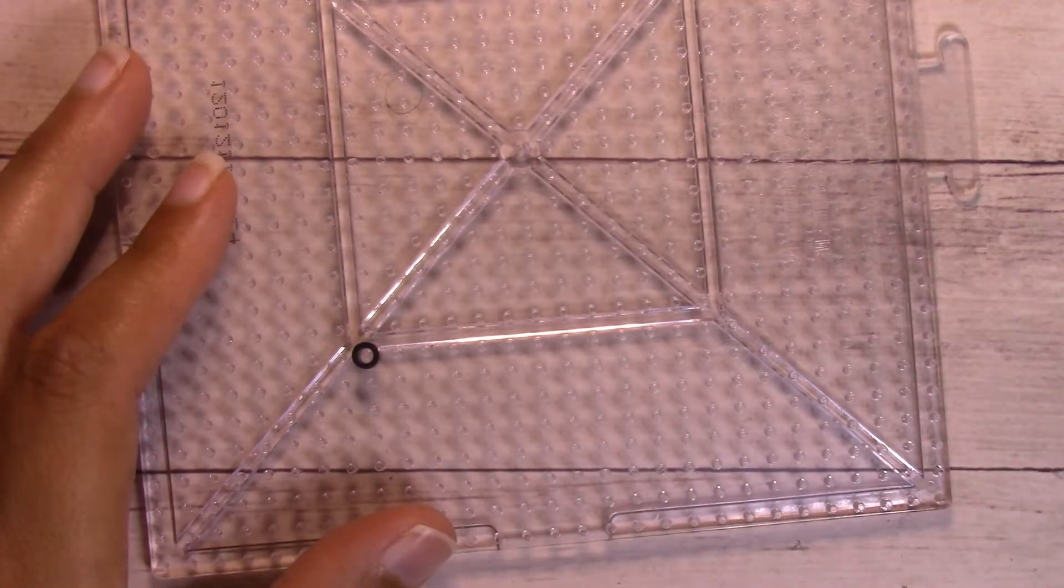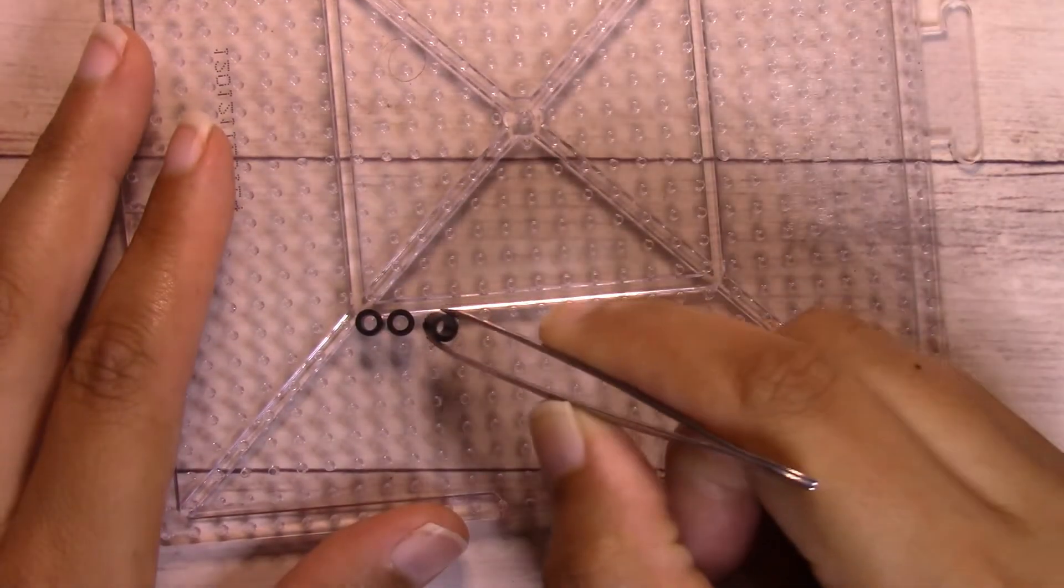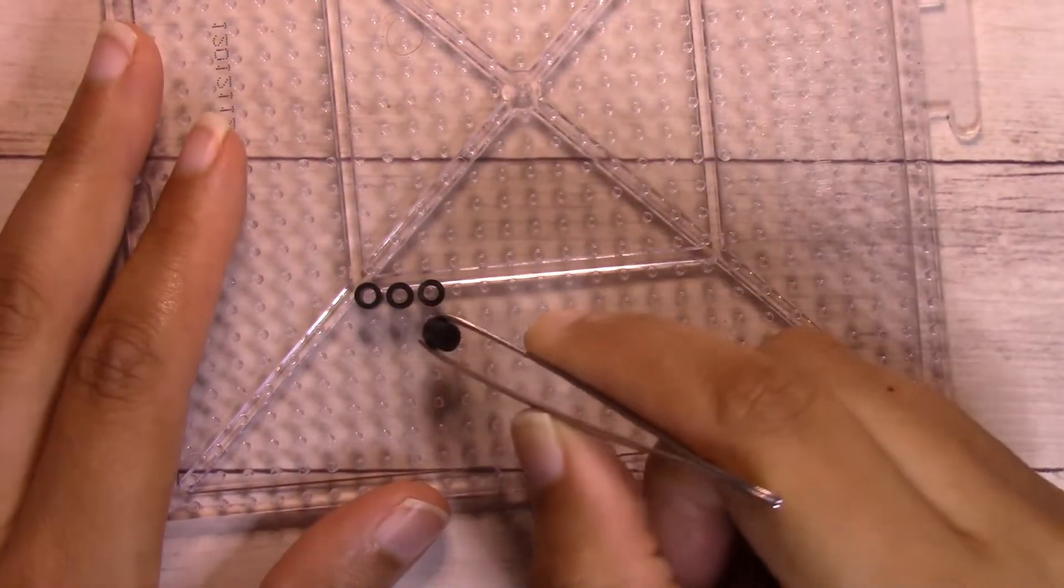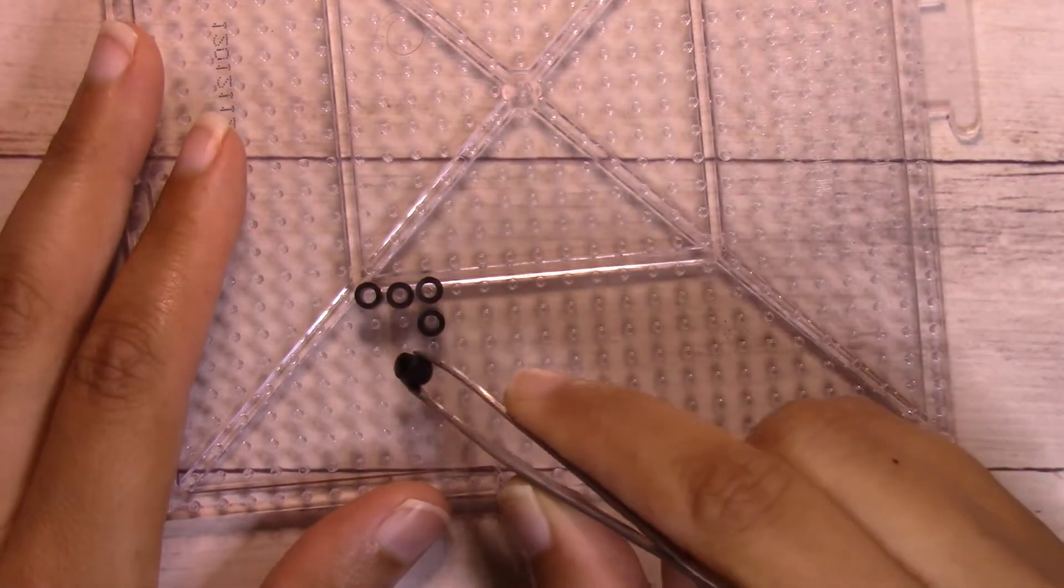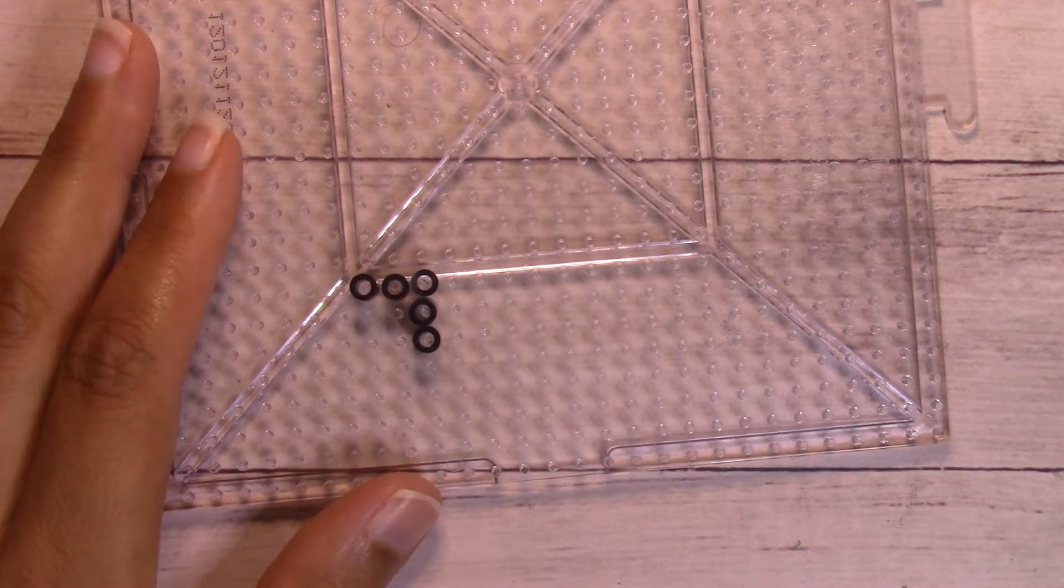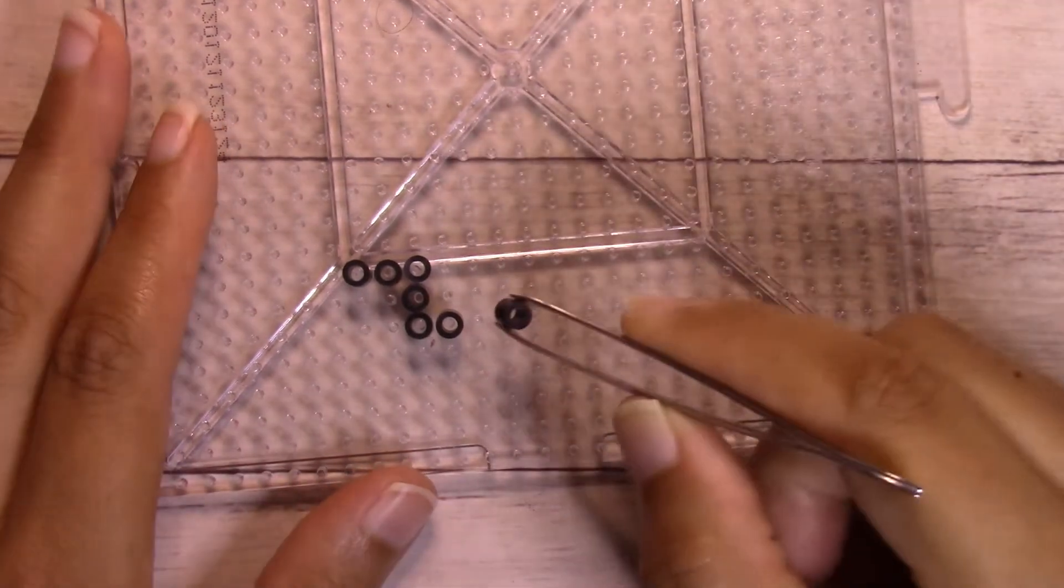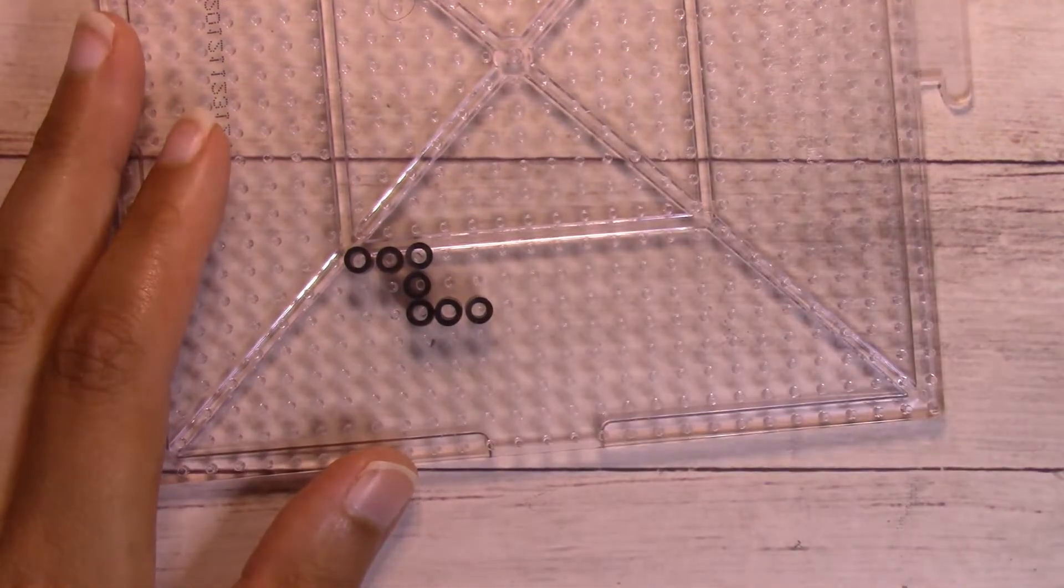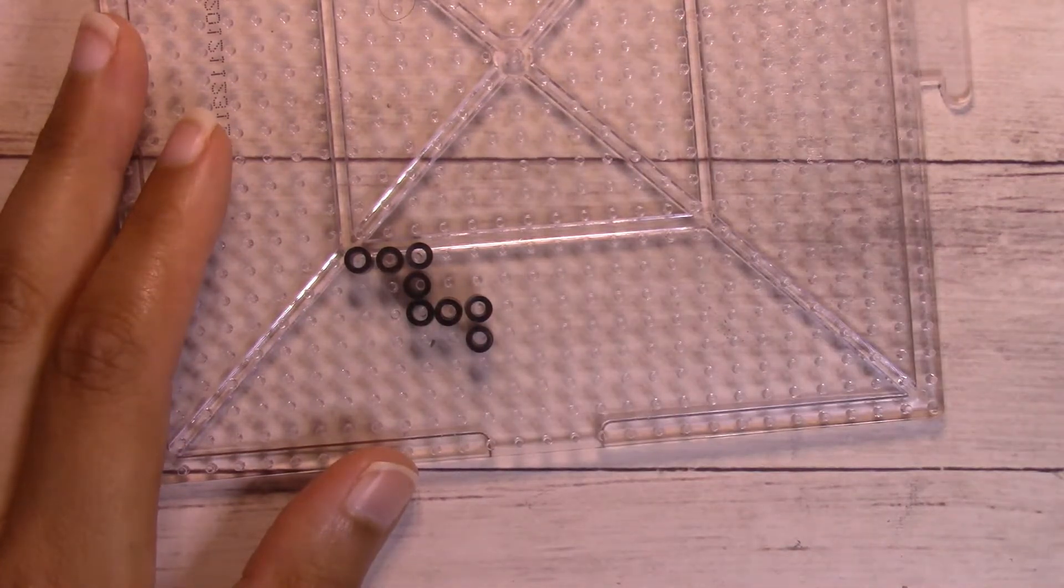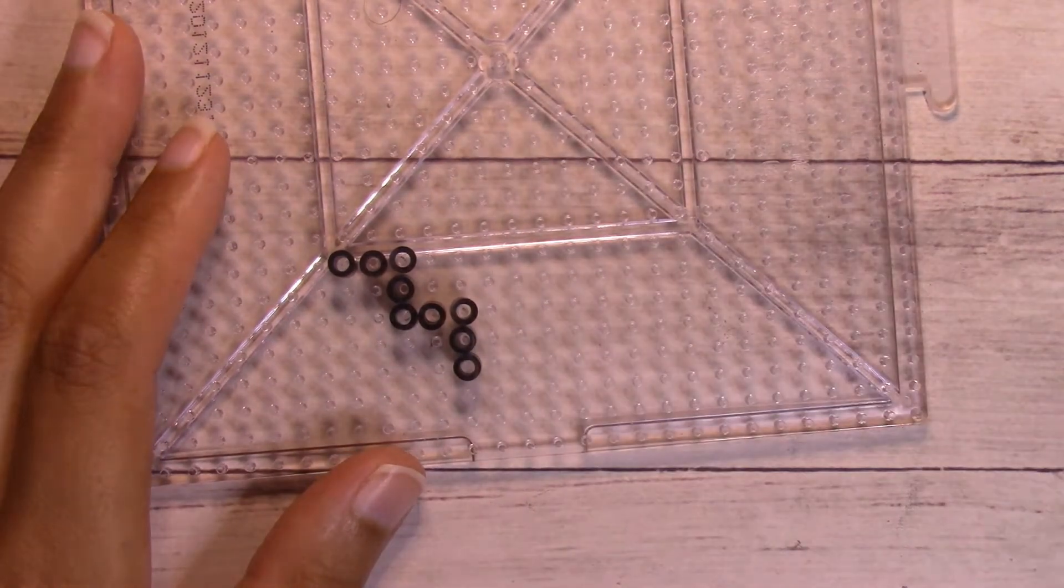Then I'm going to place two to the right so there are three in total. Then I'm going to work two below that so there are three in total, and then two to the right of that so there are three in total, and finally two below that so there are three in total. Then I'm going to work horizontally to the right so there are five in total.